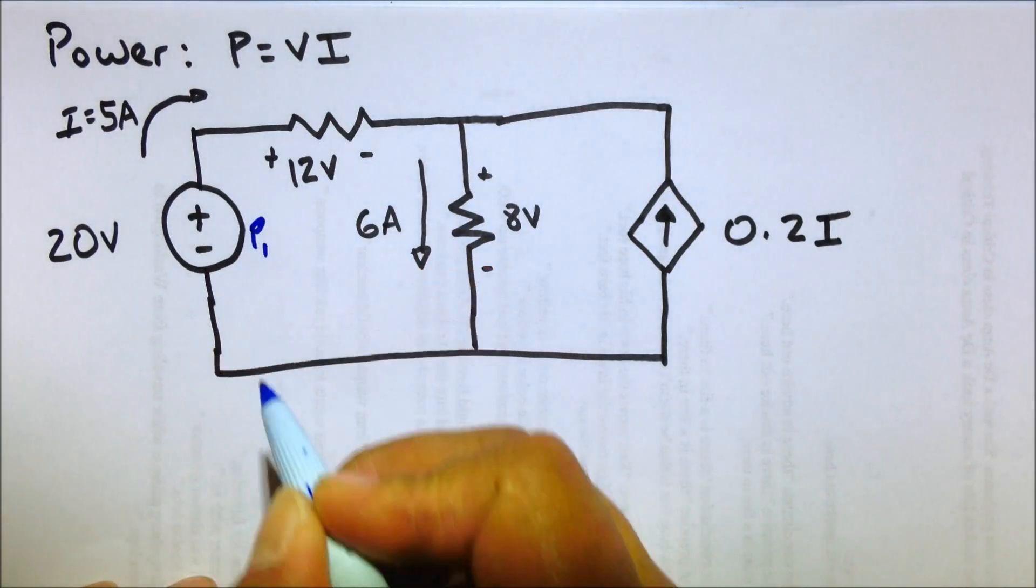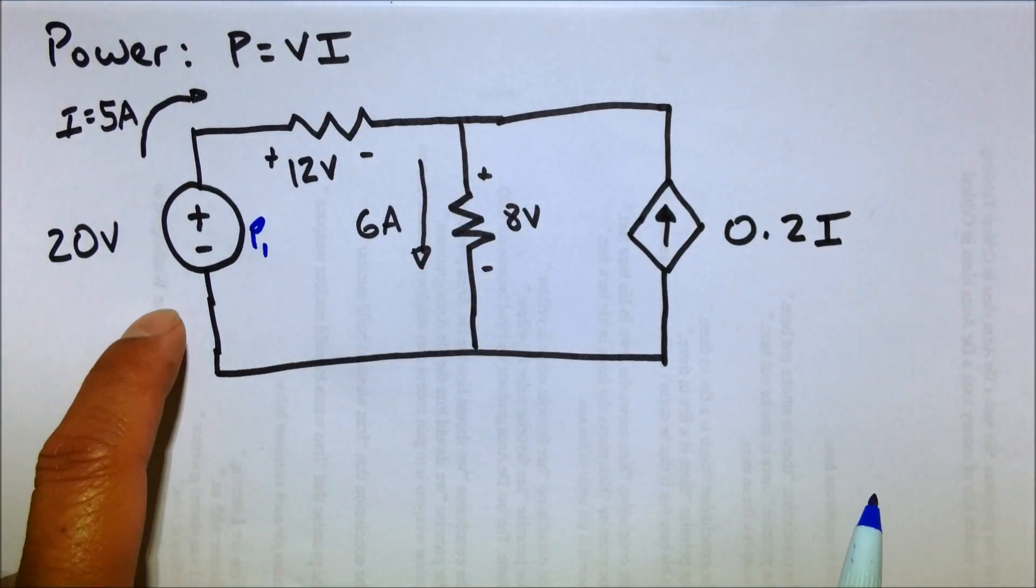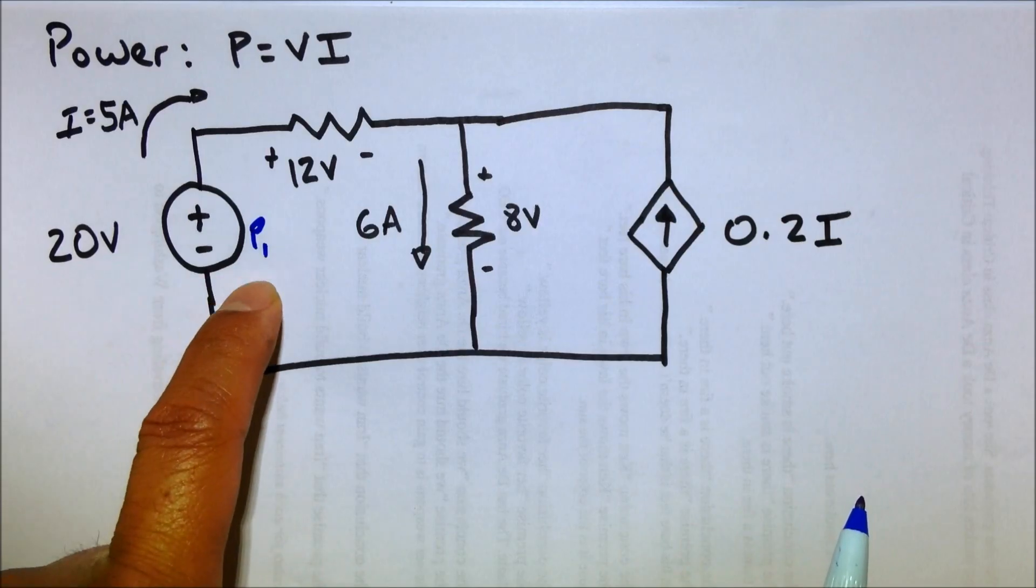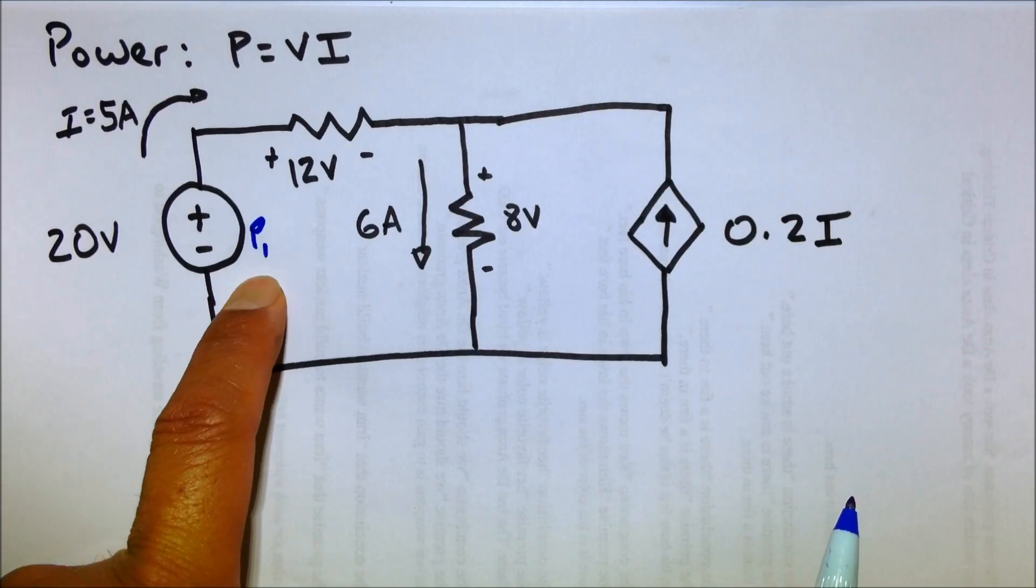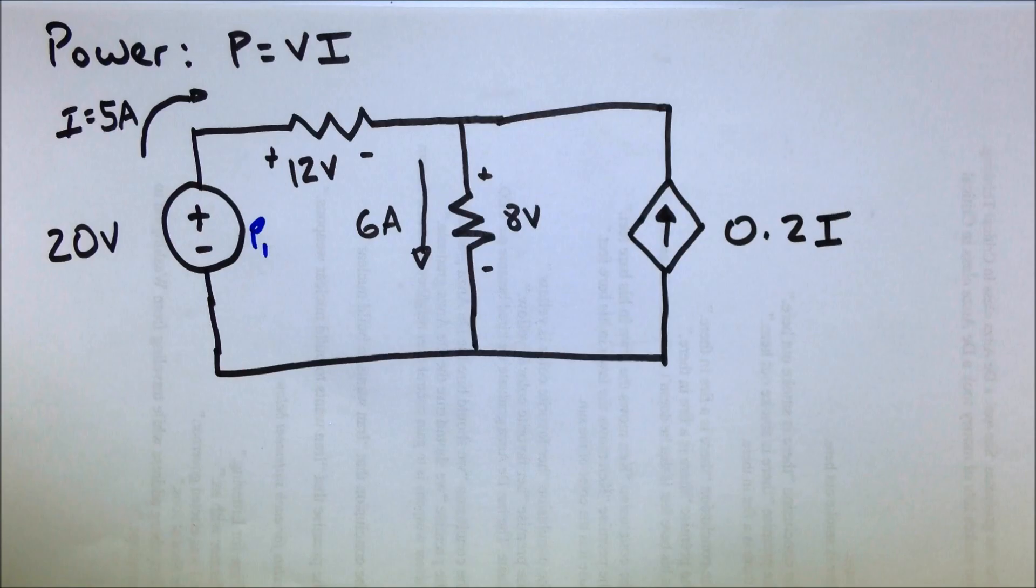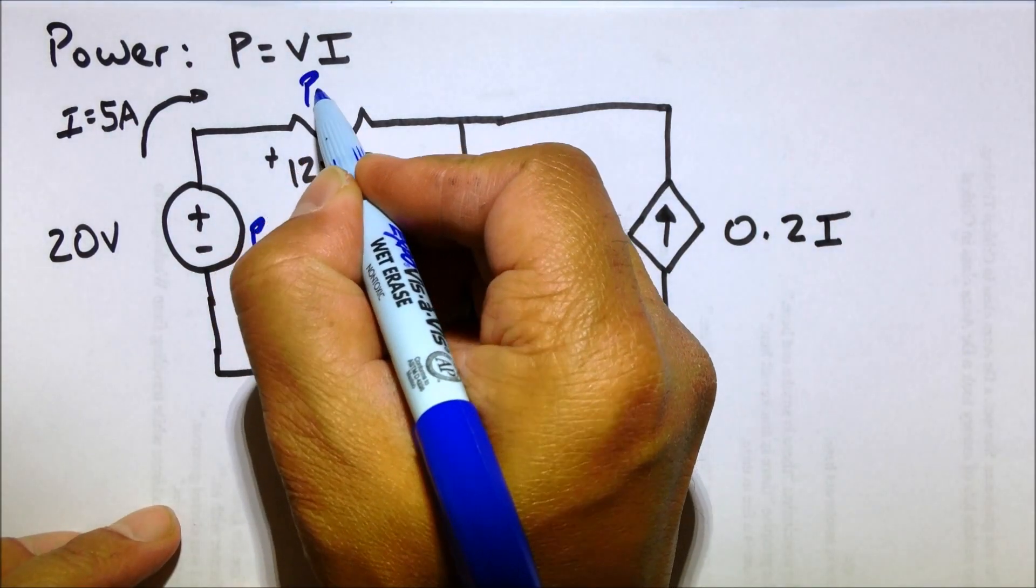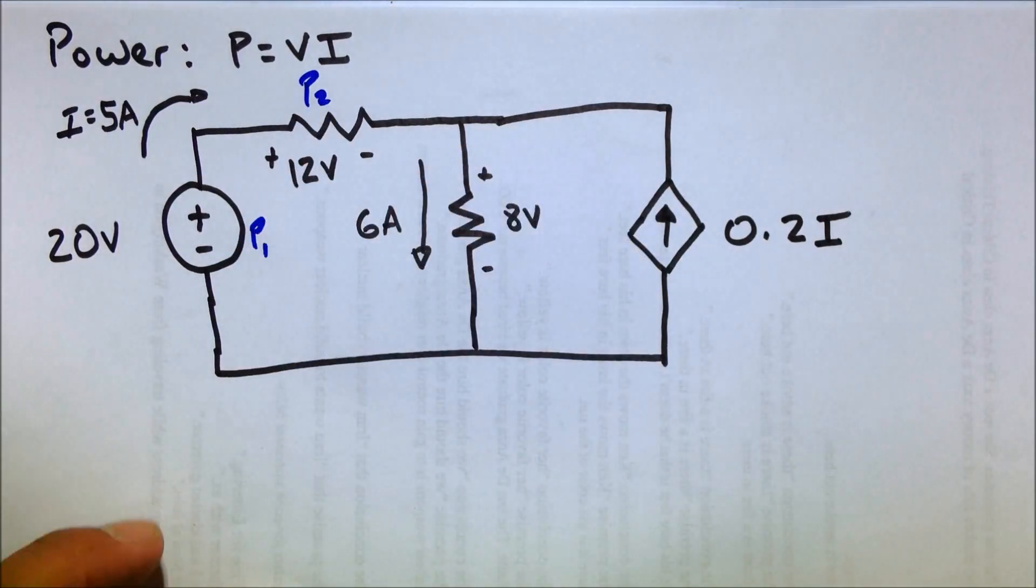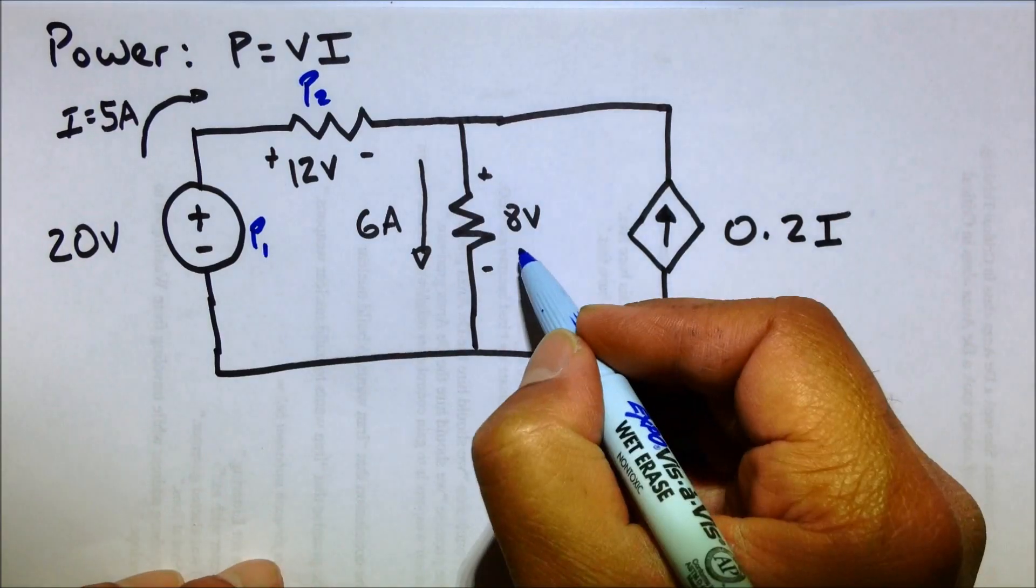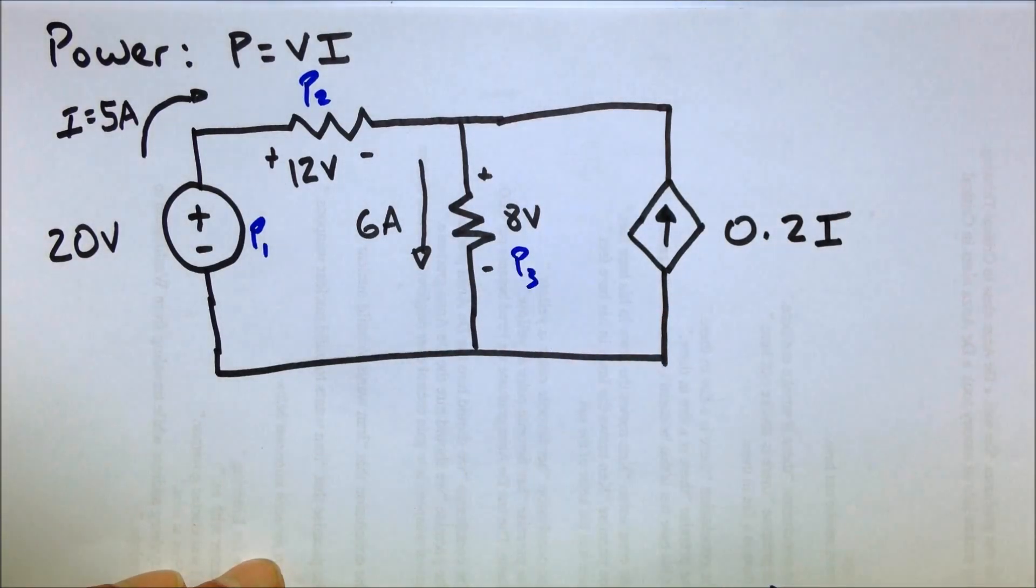So let's call this guy P1. It's a power source, right? So this is going to be the power supplied. This is a resistor. And let's call the power consumed by that guy P2. Here's another resistor. Let's say the power consumed by that we'll label as P3.